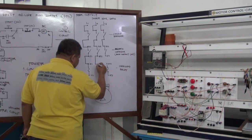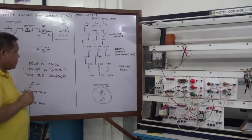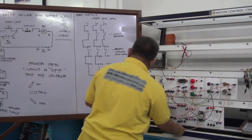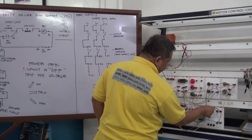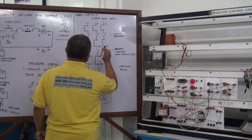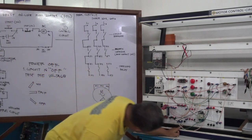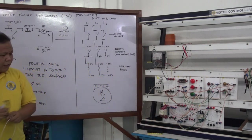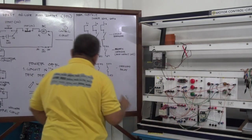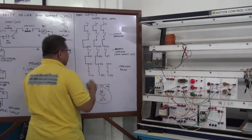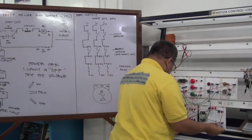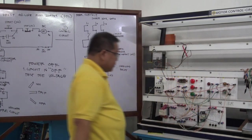Terminal 4T2 connected to Terminal 4T2 of the overload relay. This is our 4T2 and this is the overload relay. And also terminal 6T3 — 6T3 of the magnetic contactor is connected to 6T3 of the overload relay.